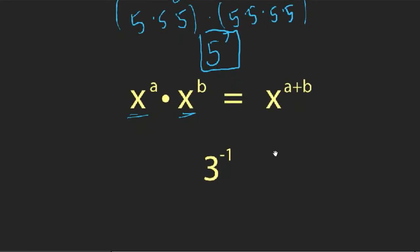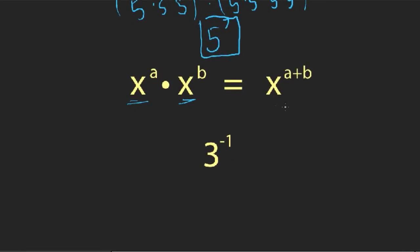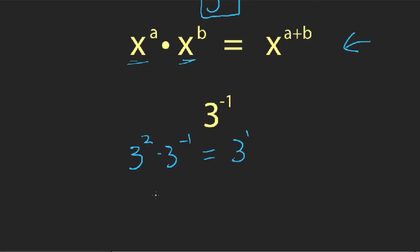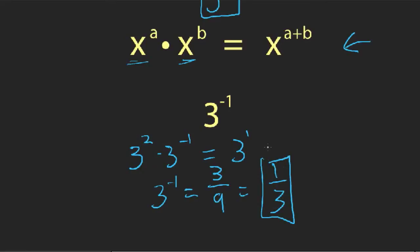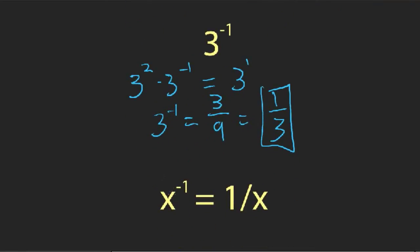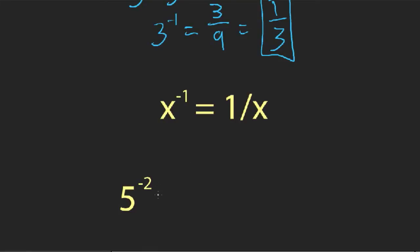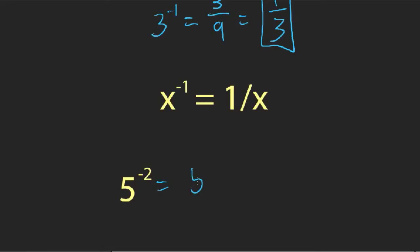This rule gives us a way to reason about negative exponents. Take three to the negative one: if the rule holds for negative exponents, then three squared times three to the negative one should equal three to the one, because two plus negative one equals one. Solving for three to the negative one means dividing both sides by three squared, which is nine. So three to the negative one equals one-third — the reciprocal. Generally, any number to the negative one power is just one over that number.